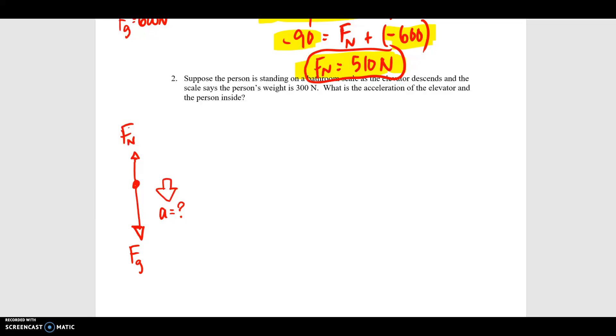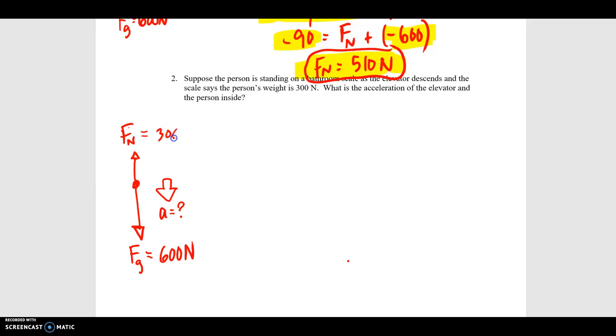Let's suppose it's the same person. So if that's the case, then 600 newtons is the gravitational pull down. If it's 300 newtons, this is what the scale is reading. Remember, that's the apparent weight, that's the normal force. So in this case, we're actually given the normal force, which is 300 newtons upward.